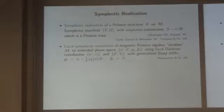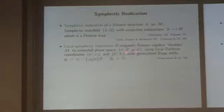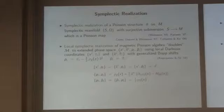What it does in practice is take the phase space and extend it — doubling it in a sense — with extra coordinates x-tilde and p-tilde, using local pairs of Darboux coordinates and finding generalized box shifts. There's a systematic way to do this. The result is a symplectic realization of the magnetic Poisson structure — it's associative — and it satisfies the required Poisson map property.